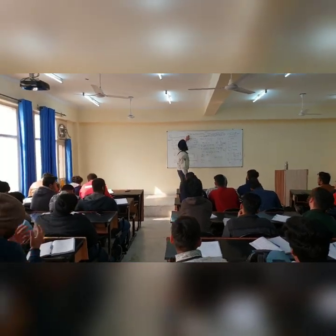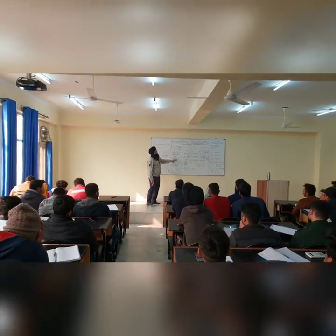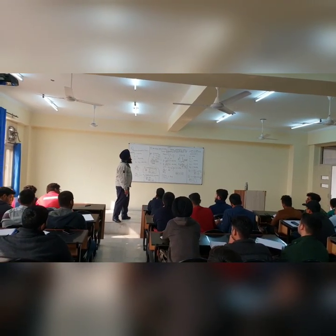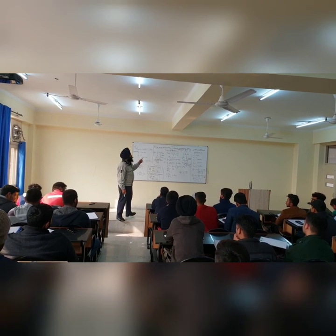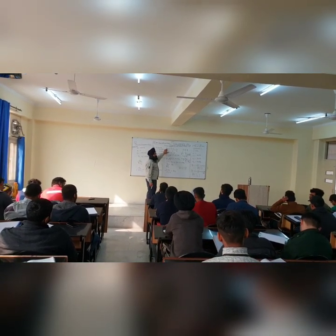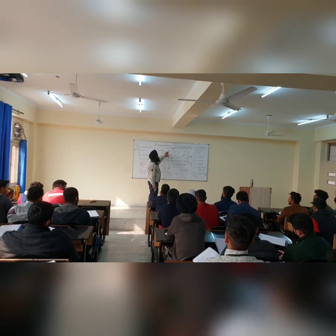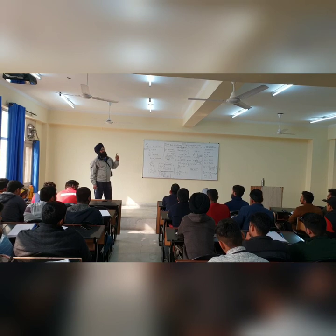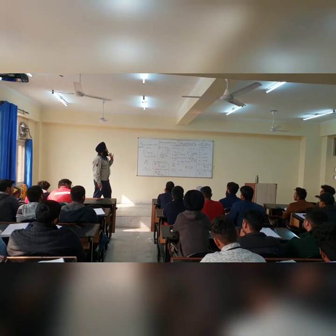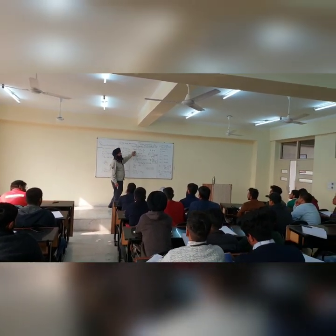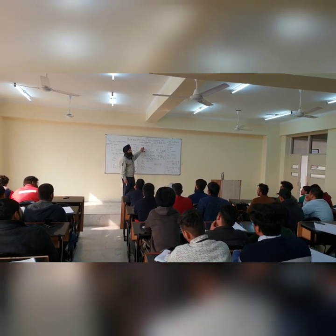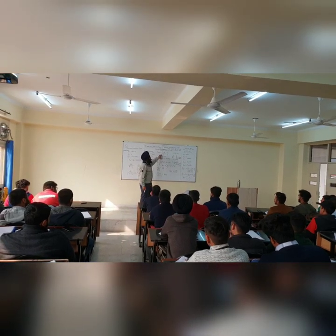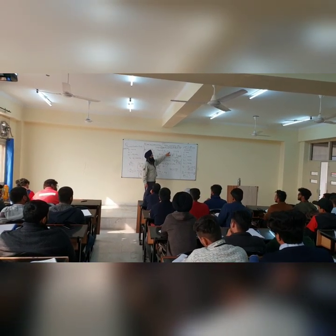Now let us come to the maximum shear stress theory, the second theory covered in class. Failure will occur when the maximum shear stress tau_max in the complex system reaches the value of maximum shear stress in simple tension at the elastic limit. The formula is: tau_max equals (working stress maximum minus working stress minimum) divided by 2, which equals the tension stress divided by 2.